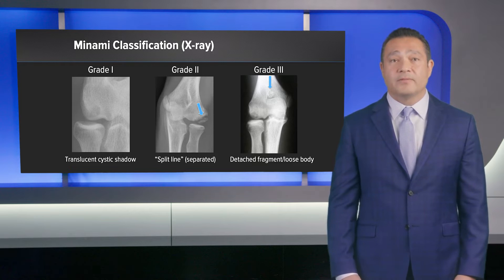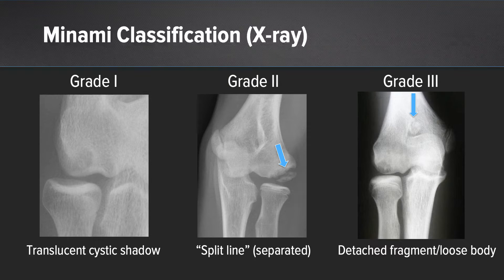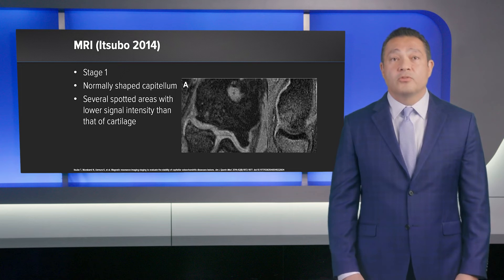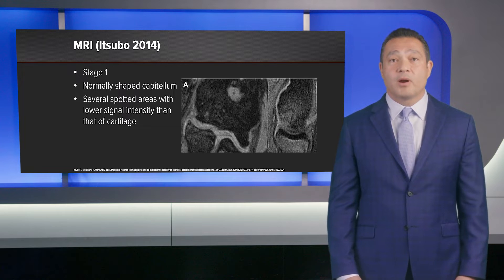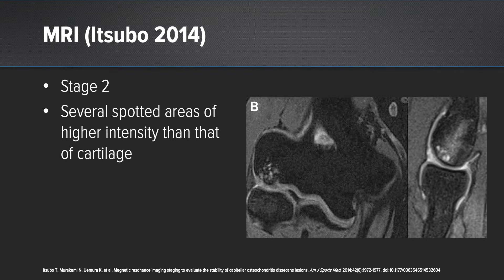It is important to discuss classification systems that guide us in the treatment of OCD lesions. The Monami radiographic classification is the most commonly used one. A grade one lesion is a lucent cystic shadow in the capitellum. Grade two has a split line separating the lesion from the subchondral bone. Grade three is when the fragment is detached and has become a loose body. The Itsubo MRI classification is the most commonly used MRI system. In stage one, there's a normally shaped capitellum with several spotted areas of high signal intensity, lower than the cartilage signal. In stage two, there are several spotted areas with higher intensity than that of cartilage.